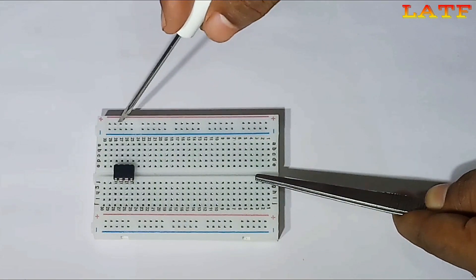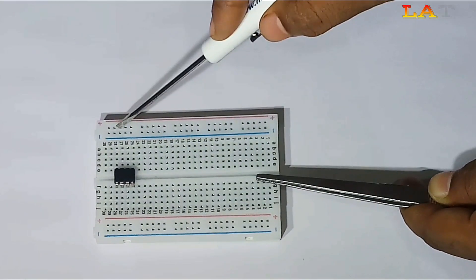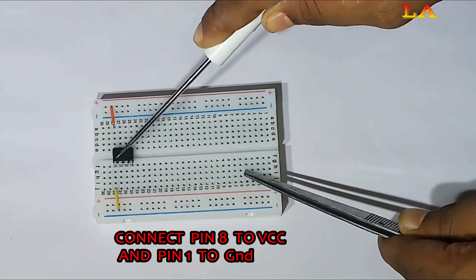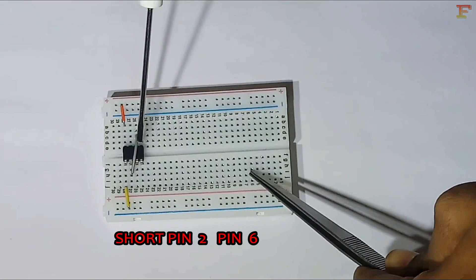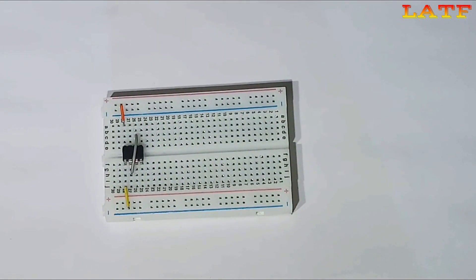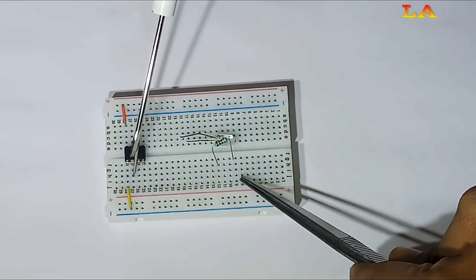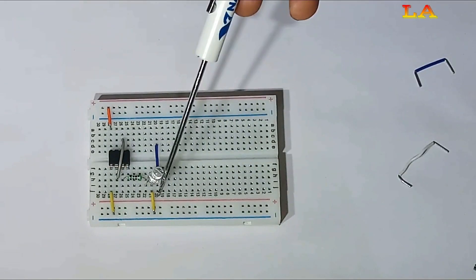This whole row is positive and this whole row is negative. First, connect pin number 8 of 555 to VCC and pin number 1 to ground. Now, short pin number 2 and 6. This gray wire is connected between pin number 2 and 6.